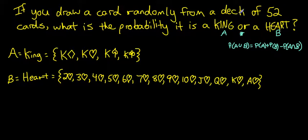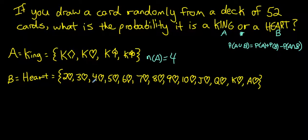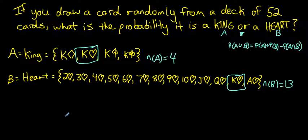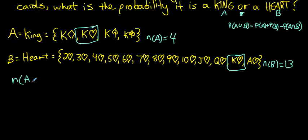Let's look at both subsets. The set of kings contains: king of diamonds, king of hearts, king of spades, king of clubs — 4 elements. The set of hearts contains 13 cards, from two through ace of hearts. Notice there is one card in both sets: the king of hearts. That card is our intersection, so the number of elements in A and B is 1.